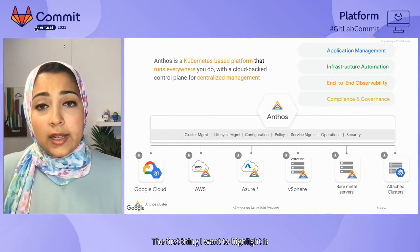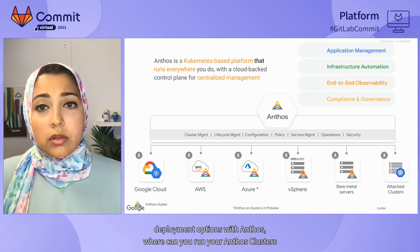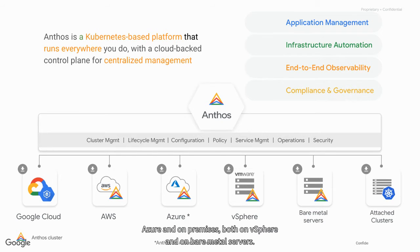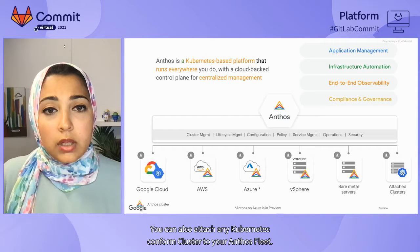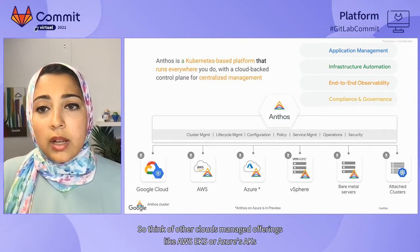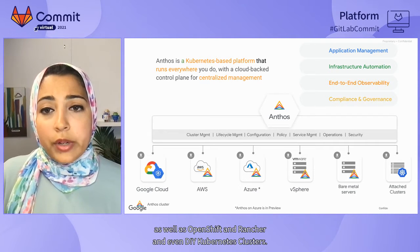The first thing I want to highlight is deployment options with Anthos — where can you run your Anthos clusters? Of course, on Google Cloud. But you can also run Google Kubernetes Engine, our managed Kubernetes offering, on AWS, Azure, and on-premises, both on vSphere and on bare metal servers. You can also attach any Kubernetes conformant cluster to your Anthos fleet — think of other clouds' managed offerings like AWS's EKS or Azure's AKS, as well as OpenShift, Rancher, and even DIY Kubernetes clusters.